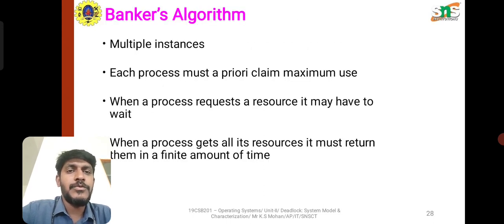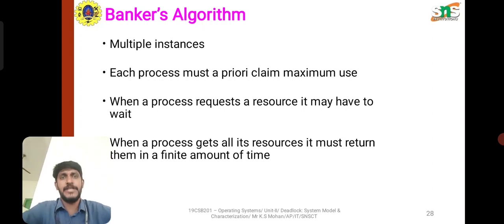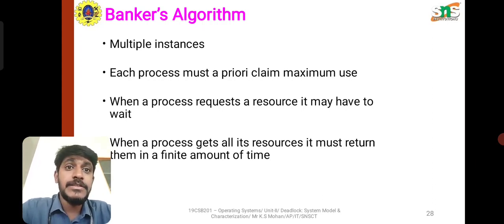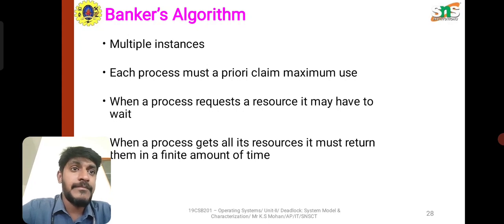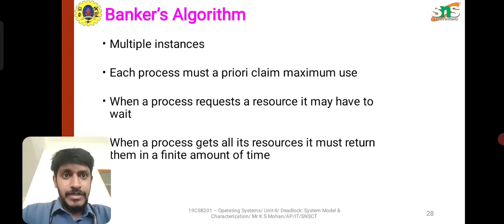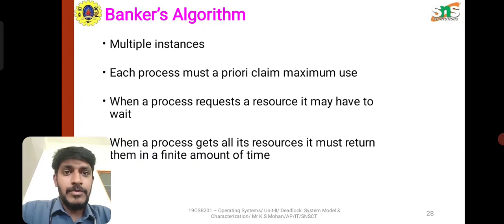The most popular algorithm used in deadlock avoidance is the Banker's algorithm, used for multiple instances of resources. Each process must declare its maximum resource usage in advance. When a process requests a resource it may have to wait, and when a process gets all its resources it must return them within a finite amount of time.